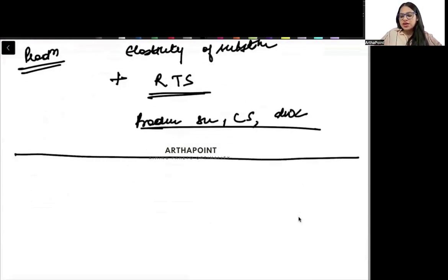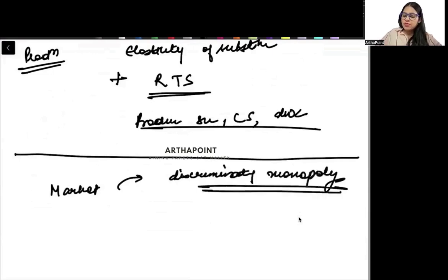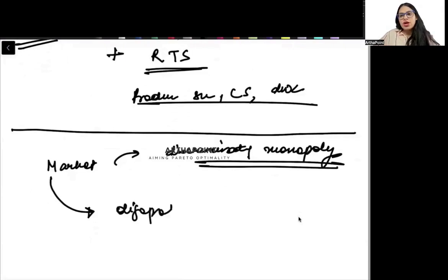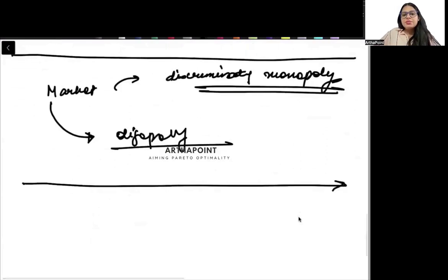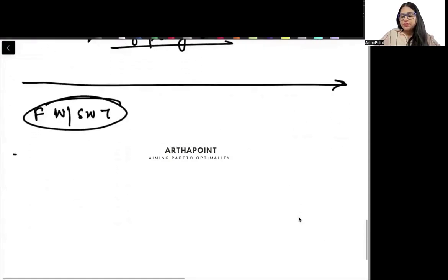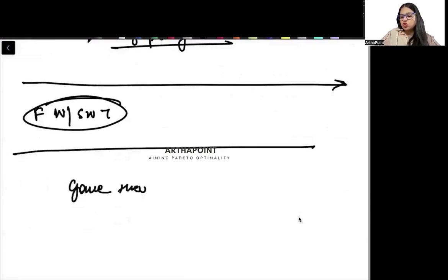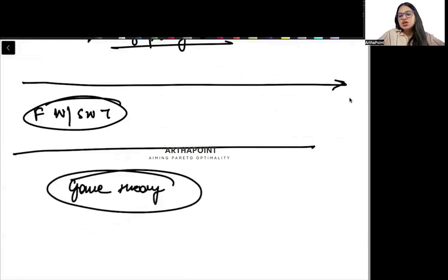As far as market structure is concerned, I think there can be a question which can be asked from discriminating monopolist. So first degree, second degree, third degree, revise these well, and there can also be a question on your oligopoly models. Try to do those models very well. There can be a question on a theoretical question on first or second welfare theorem, and you need to make sure that you do that very, very well. Apart from that, there can be a question from game theory. Last year also question number 60 was on game theory. That was on simultaneous game. There are chances that this time they may ask you a question on mixed strategies, so you need to do that question also.